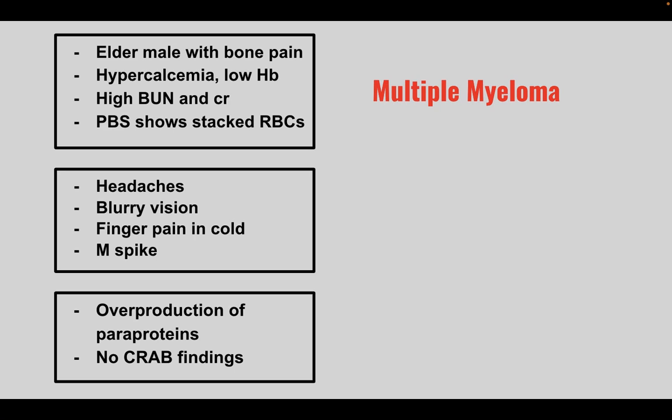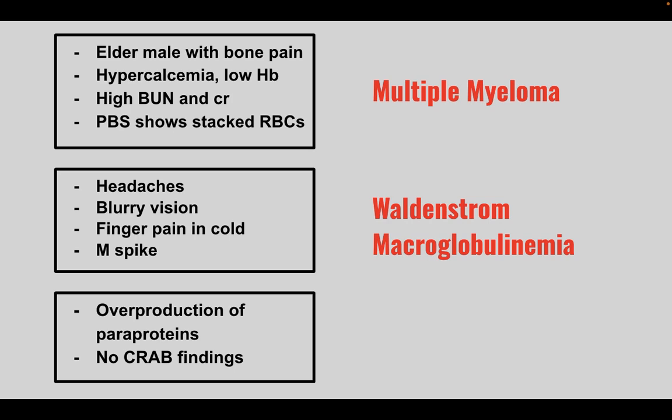Next is a patient presenting with headaches, blurry vision, and finger pain when they go out in the cold. This is associated with an M spike. This is Waldenström's macroglobulinemia.